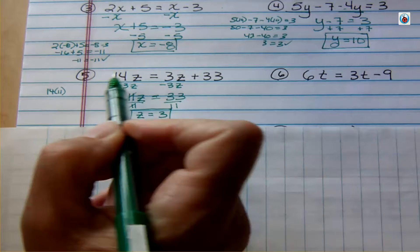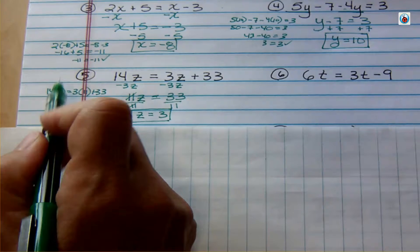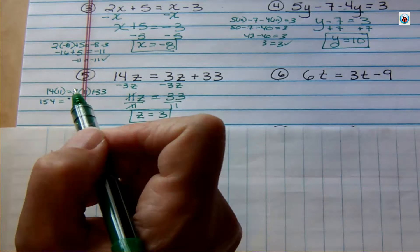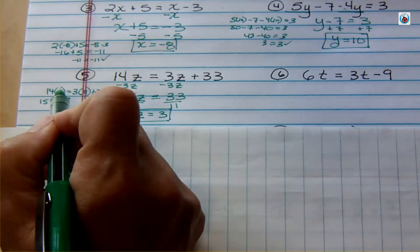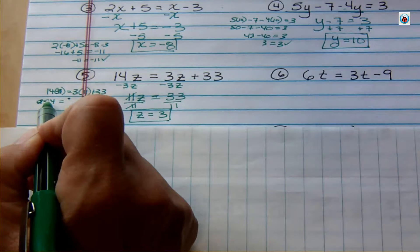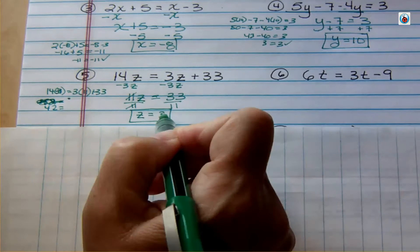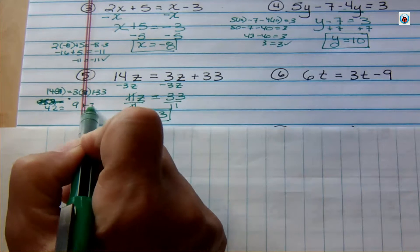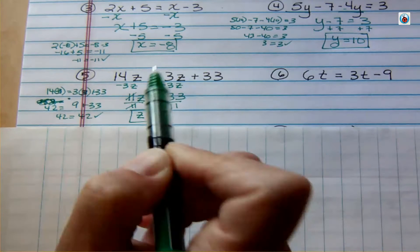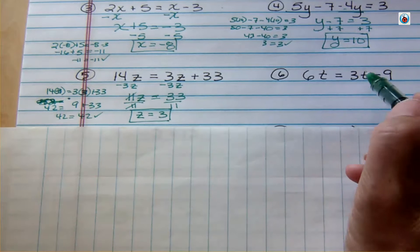Let's check: 14 times 3 should equal 3 times 3 plus 33. Wait — I accidentally plugged in 11 instead of 3. That can't be right. Let me redo it: 3 times 3 is 9, plus 33 is 42, and 14 times 3 is 42. It checks out. Hopefully you caught my mistake before I did — that means you're understanding enough to know when something's going wrong.